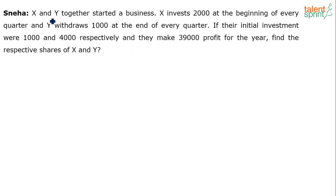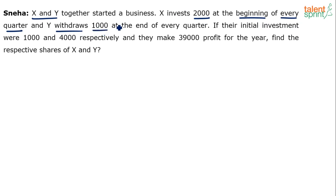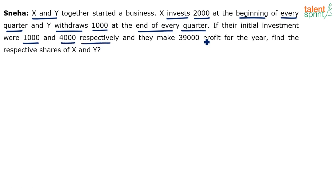So basically this is a question on partnership where there are two partners X and Y who have started a business. X invests 2,000 at the beginning of every quarter and Y withdraws 1,000 at the end of every quarter. Their initial investments are 1,000 and 4,000 respectively, and they make a total profit of 39,000. Find their respective shares.